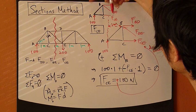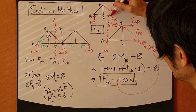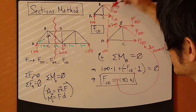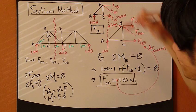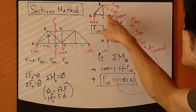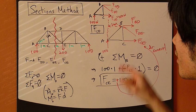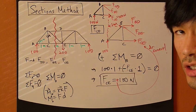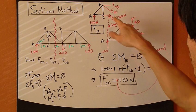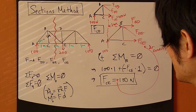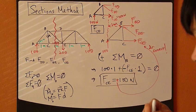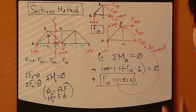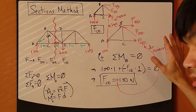Positive means direction correct — FBE does indeed point to the right. Coming back to the real picture, FBE = 100 Newton pointing to the right means the FBE member is under tension, using the sign convention to determine that.